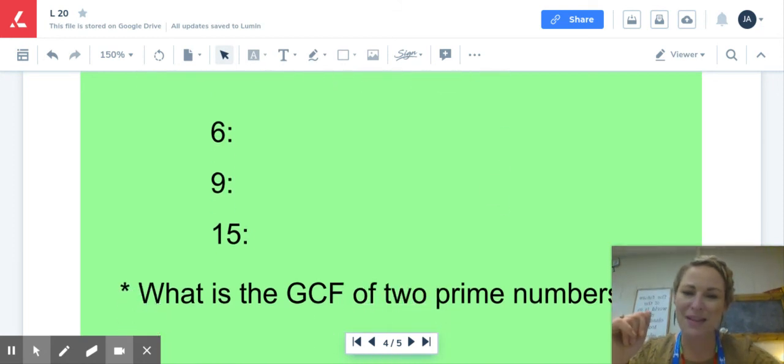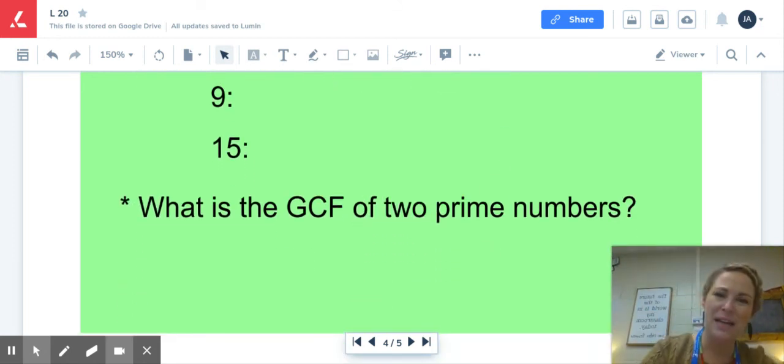One thing to touch on really quick is this question down here. What's the GCF of two prime numbers? That's just a little question to get your brain remembering about prime numbers. The definition of a prime number is any number that has two factors. The factors are one and itself. So if we're talking about prime numbers, the GCF of two prime numbers and really the only factor two prime numbers will ever have in common is the number one.